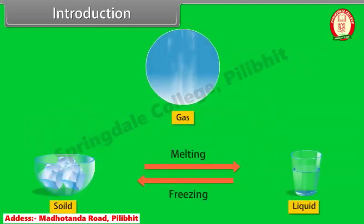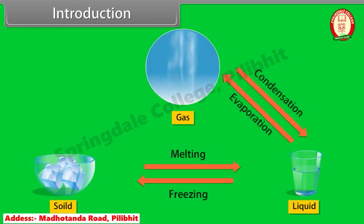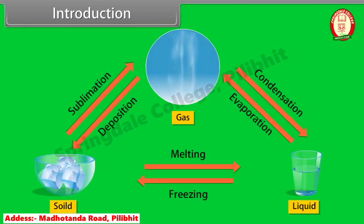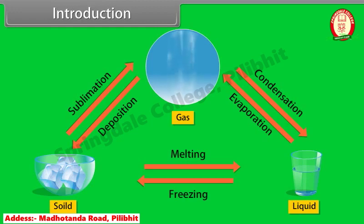Equilibria are solid and liquid, liquid and gas, solid and gas. In homogeneous equilibria, the reactants and the products are in the same phase, whereas in heterogeneous equilibria, the reactants and the products are in different phases.